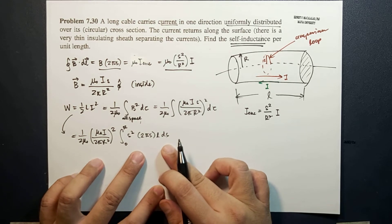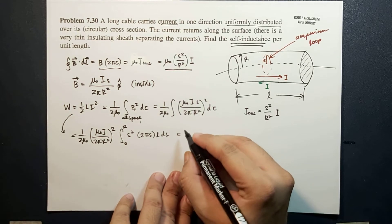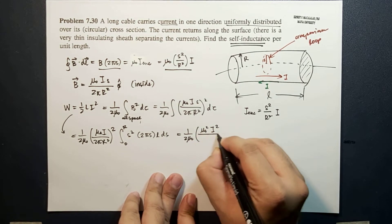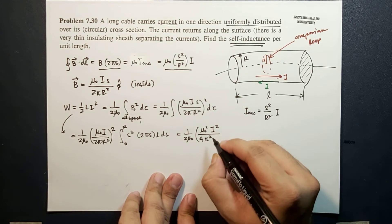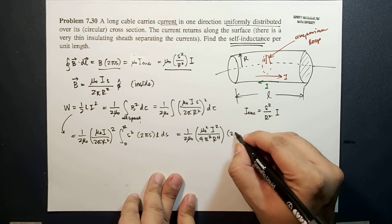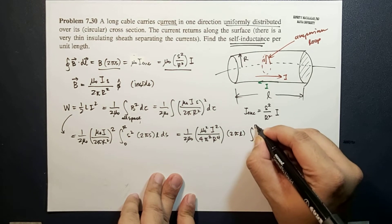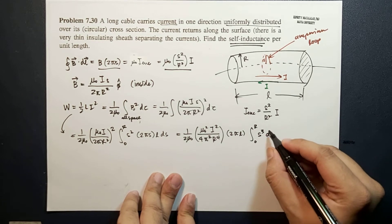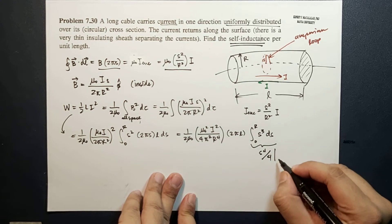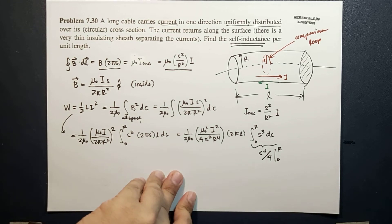This becomes 1/(2μ₀) times μ₀²I²/(4π²R⁴) times 2πL times the integral of S³ dS from 0 to R, which is S⁴/4 evaluated from 0 to R, which is just R⁴/4.